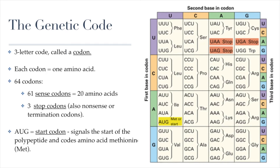You also have one start codon, which always comes at the start of the gene. The start codon is AUG, and that is the only start codon. It not only indicates a start, but also signals for the amino acid methionine to be placed. Methionine is the first amino acid in every protein because AUG is the start codon for every protein.